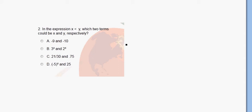In this problem we're asked to decide which of the two numbers is less than the other. So the order in which they write this matters. They say in the expression x is less than y, which two terms could be x and y respectively.